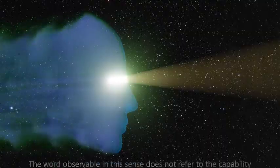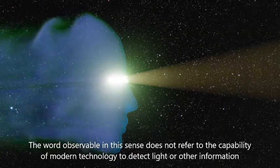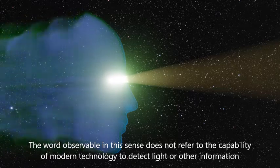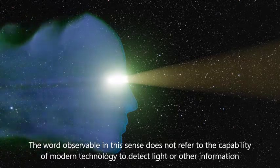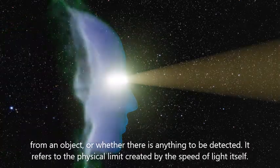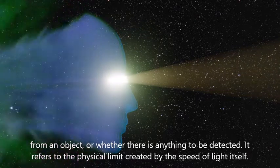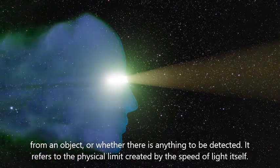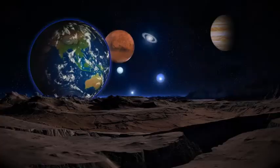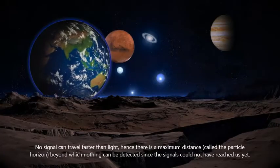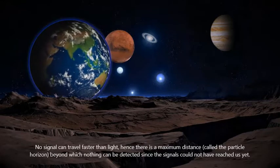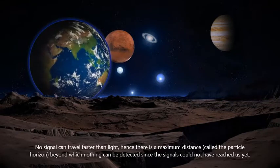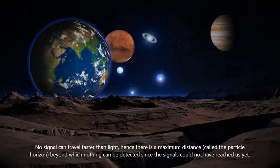The word observable in this sense does not refer to the capability of modern technology to detect light or other information from an object or whether there is anything to be detected. It refers to the physical limit created by the speed of light itself. No signal can travel faster than light, hence there is a maximum distance, called the particle horizon, beyond which nothing can be detected since the signals could not have reached us yet.